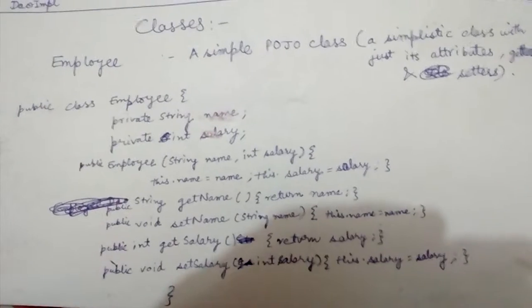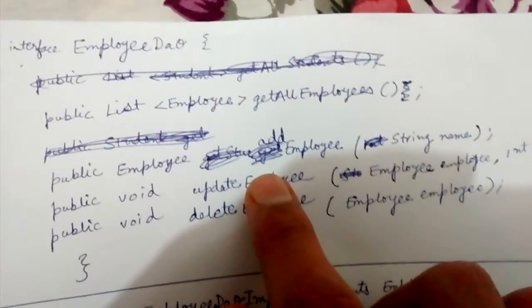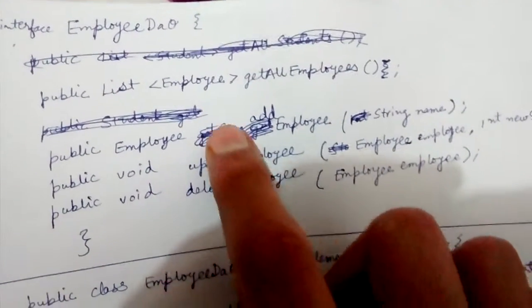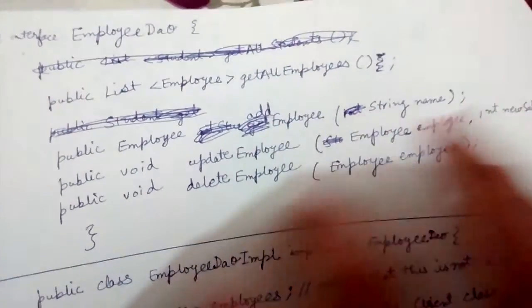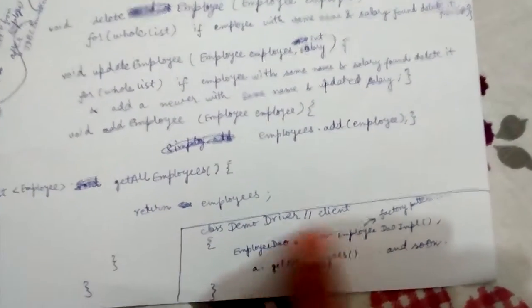Let's look at our second class, the EmployeeDAO interface. It's declaring four methods: Get (the read operation), Create, Update, and Delete — all the CRUD operations. Here we are actually defining the implementations of these CRUD operations in the EmployeeDAOEmployee class. Let's look at how our client will be calling it.